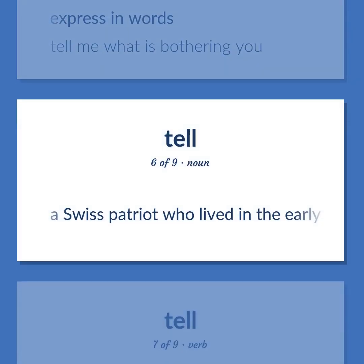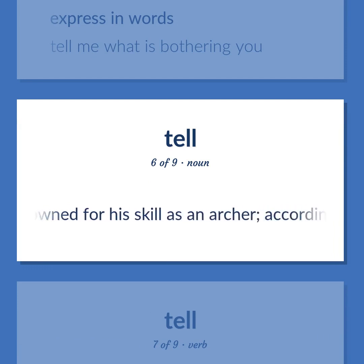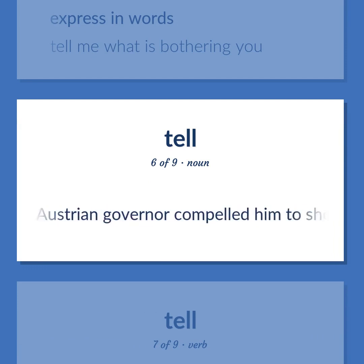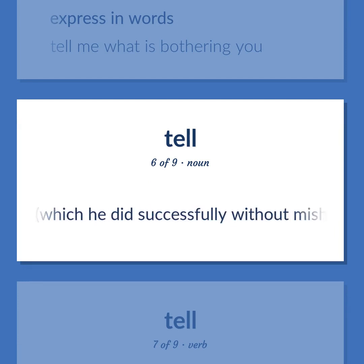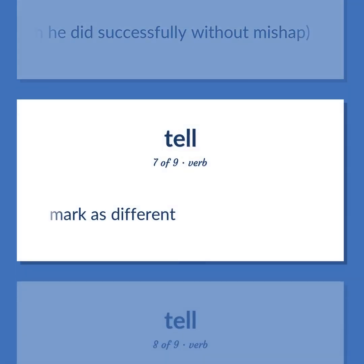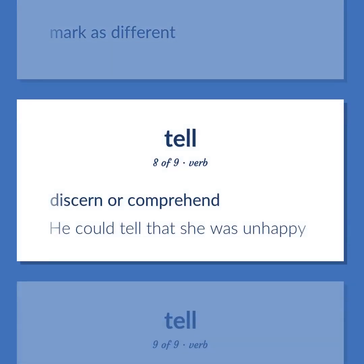Tell (William Tell): A Swiss patriot who lived in the early 14th century and who was renowned for his skill as an archer. According to legend, an Austrian governor compelled him to shoot an apple from his son's head with his crossbow, which he did successfully without mishap. Mark is different. Discern or comprehend. Example: He could tell that she was unhappy.